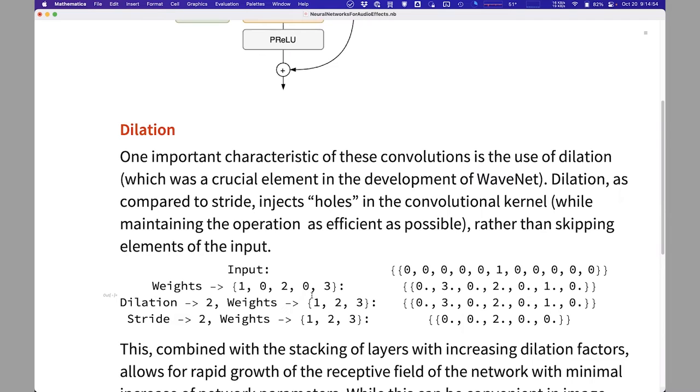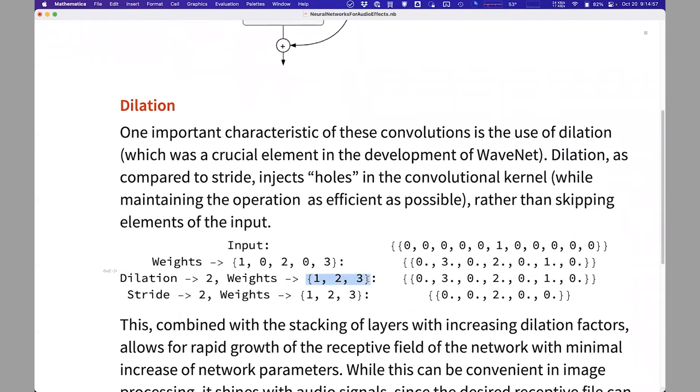So the solution that is used in this specific case is using convolution with dilation. Dilation essentially injects holes in the kernel. So a convolution with weights, for example, here, one, two, three, with a dilation factor of two